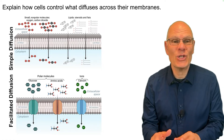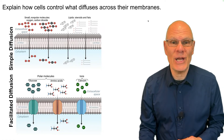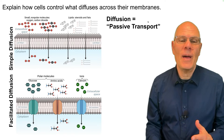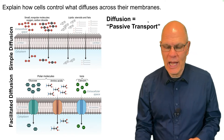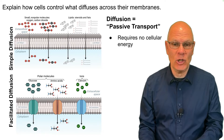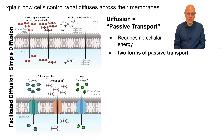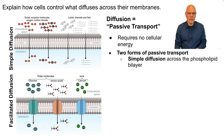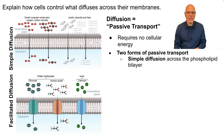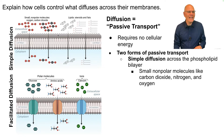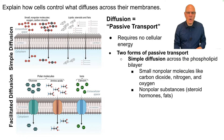How do cells control what diffuses across their membranes? Diffusion is called passive transport because it requires no cellular energy. There are two forms. The first is simple diffusion across the phospholipid bilayer. Two things can do simple diffusion: small non-polar molecules such as oxygen, nitrogen, and carbon dioxide, and non-polar substances such as steroid hormones or fats.